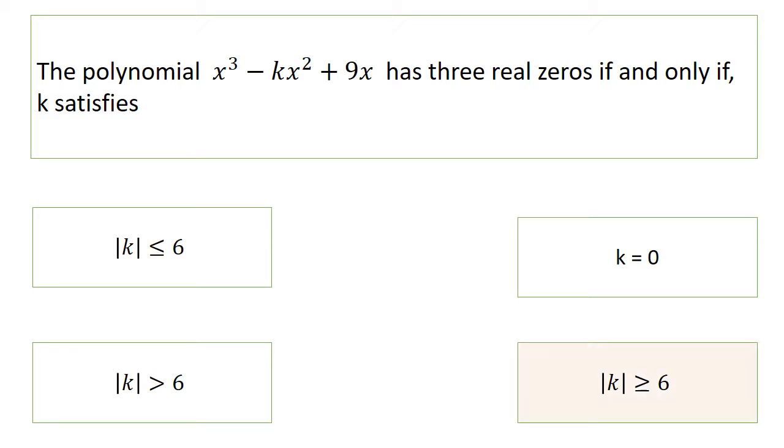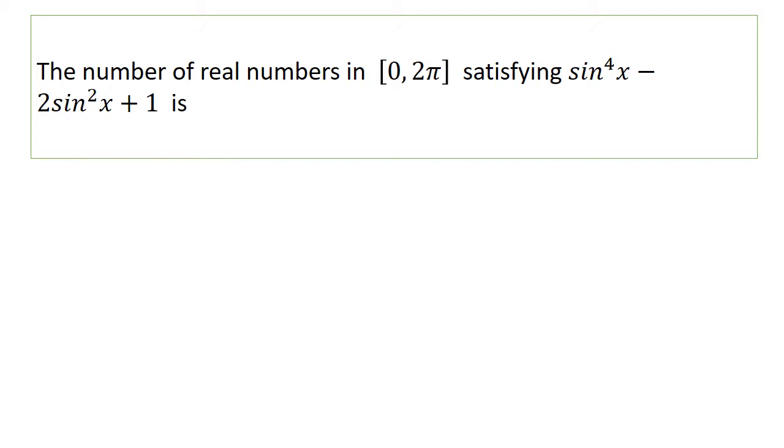For what value of k does this polynomial have three real zeros? Yes, it is |k| ≥ 6. Then only this polynomial x³ - kx² + 9x has three real roots.